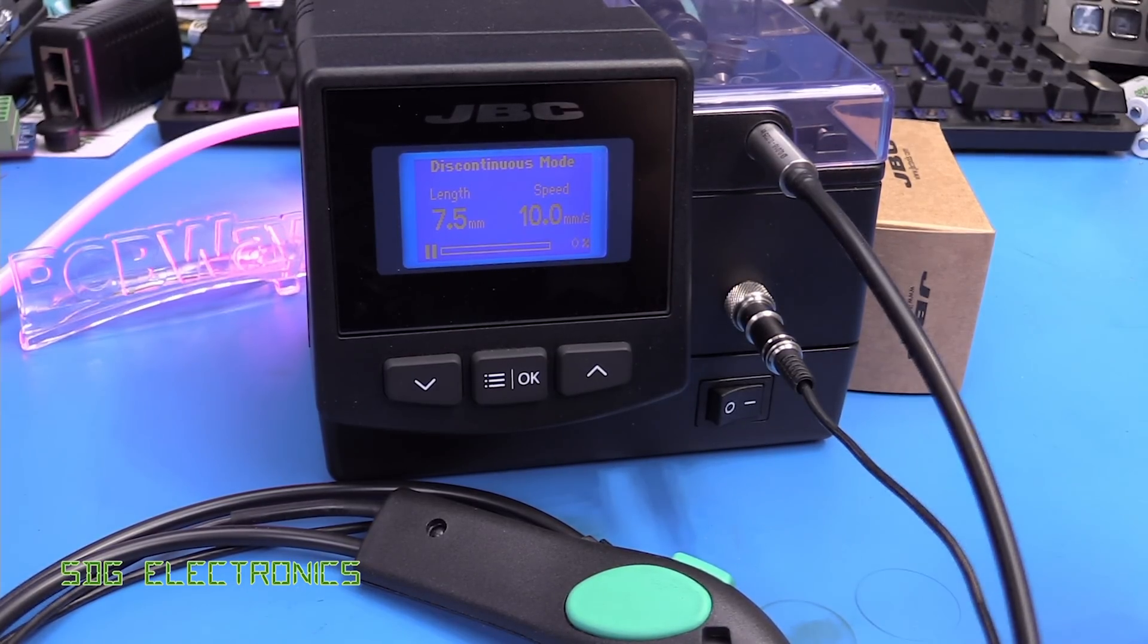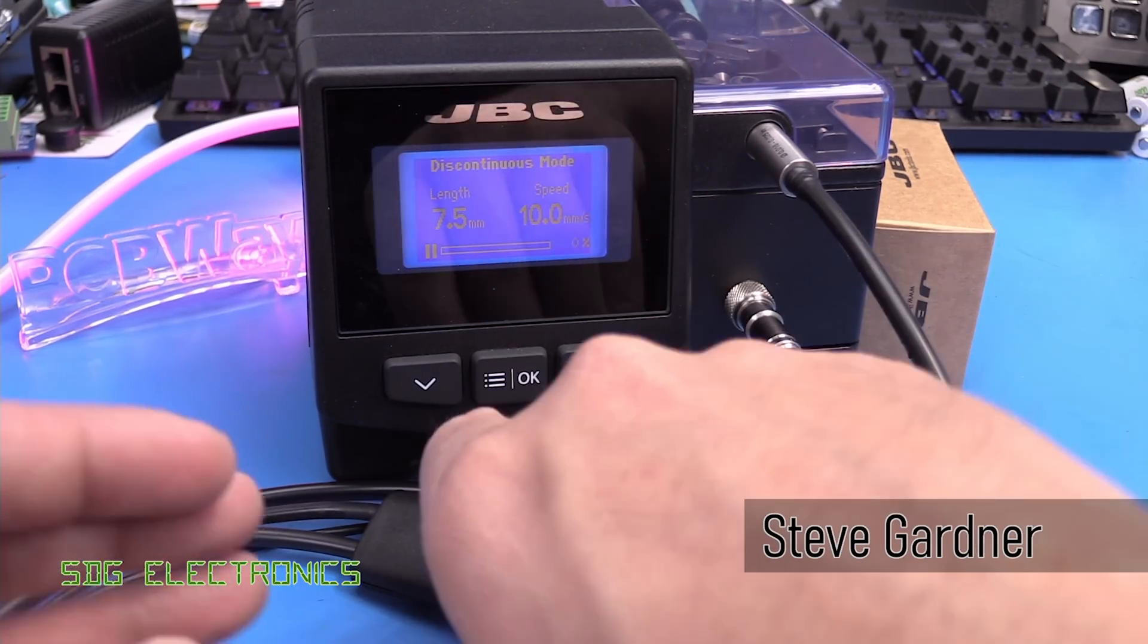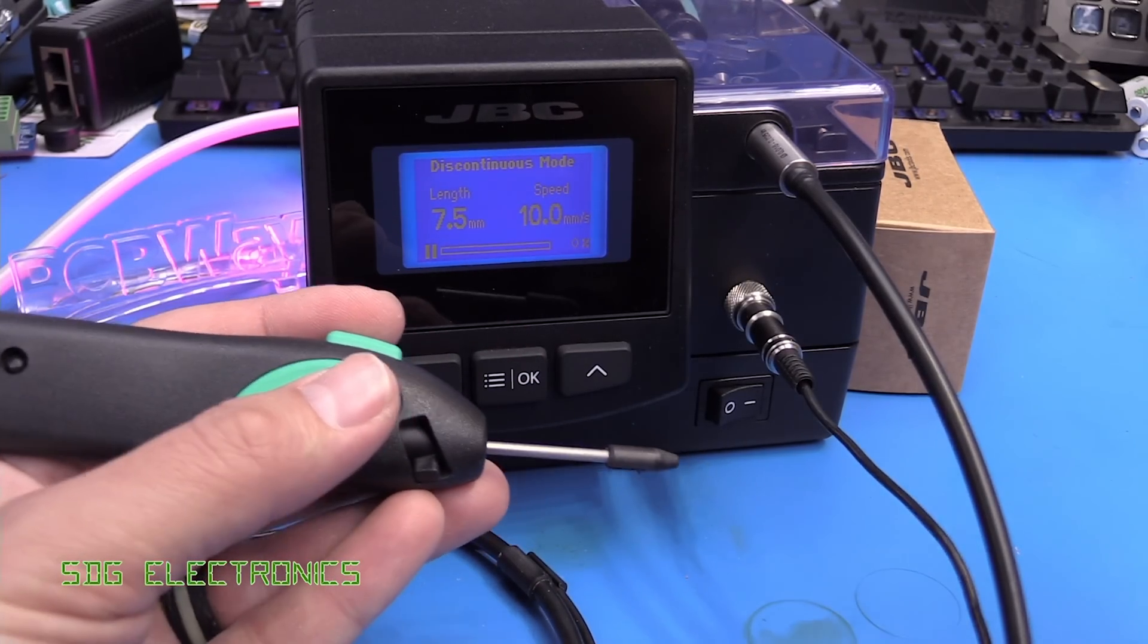Hi, today we're going to be looking at this JBC solder feeder once again. For those that missed my previous video on it, I'll put a link up here. Briefly, the idea is that you have this handpiece and this unit will feed solder down the tube and poke it out the end.